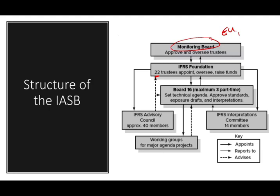The trustees have the responsibility of appointing the board — the board of the IASB — and establishing their contract of service and performance criteria. If they appoint the board, that means they're going to oversee this process as well. The board is important because this is where people are really working on setting the technical agenda and approving the standards. The board is composed of 16 members — three part-time and 13 full-time.